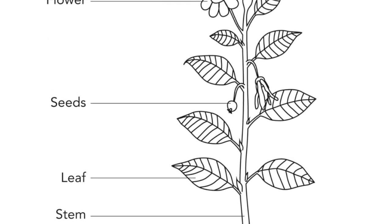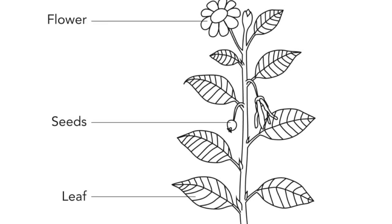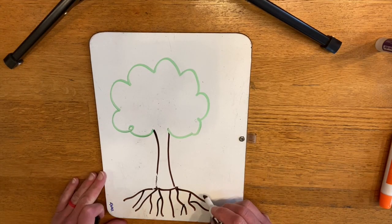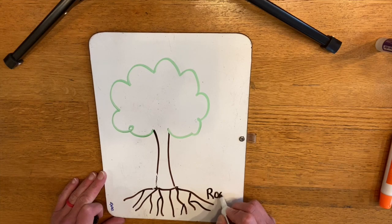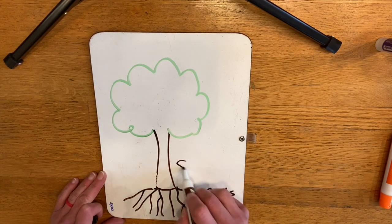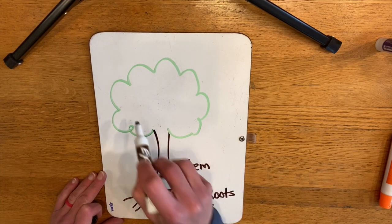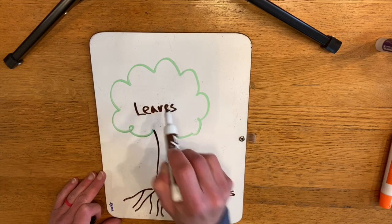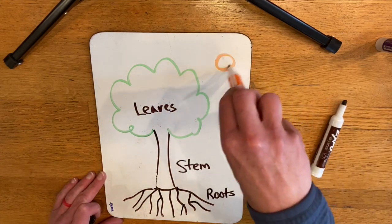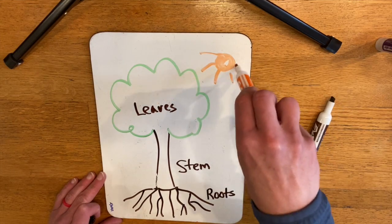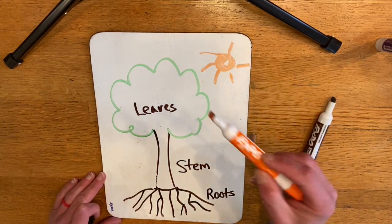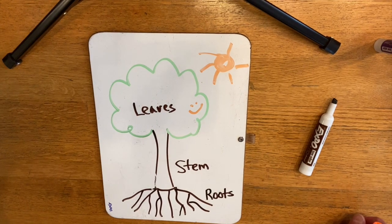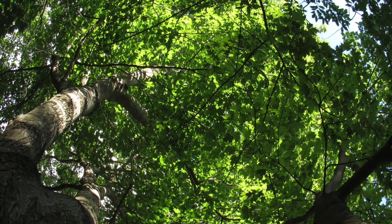You may be thinking, geez, this tree looks nothing like a flower — but really they are very similar. Roots hold both in place and help bring up water and nutrients from the soil. The stem, or the trunk, helps move food and water up and down and supports the leaves. Leaves collect sunlight to make food, whether it's a dandelion or a mighty oak.